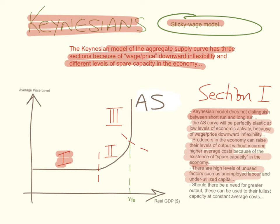Should there be a need for greater output, these can be used at their fullest capacity at constant average costs. This means that if the economy is operating in section one, any increase in aggregate demand will not affect the price level — it will lead to an increase in real output without leading to a rise in the average price level, because of the lot of spare capacity and the downward inflexibility of wages and prices.